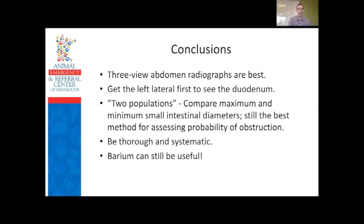Takeaways: three-view abdominal radiographs are best, and the order matters — take the left lateral view first to ensure gas in the duodenum and antrum persists into subsequent images. Don't get too hung up on vertebral body ratios; instead look for the two-population pattern using maximum and minimum diameters. Be thorough and systematic — look at everything including areas outside the GI tract, include the pelvis in your field of view, and collimate properly. Barium studies are not dead — they still have a place when ultrasound isn't available, and barium upper GI series can still effectively diagnose obstructions that ultrasound might replace in many practices.